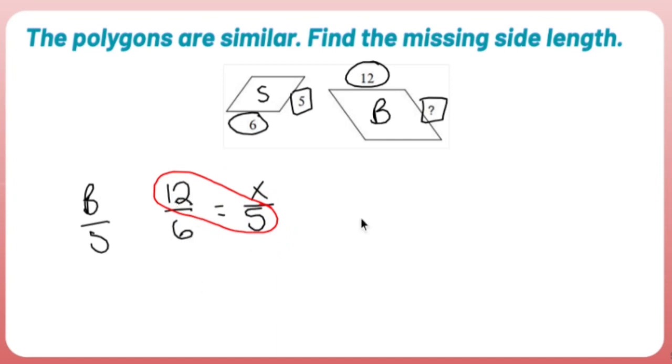So I could do 12 times 5, which is 60. Then you put the equal sign there. And then the other diagonal, 6 times x is 6x. Divide both sides by 6, x equals 10.